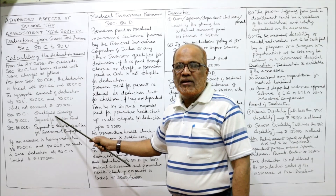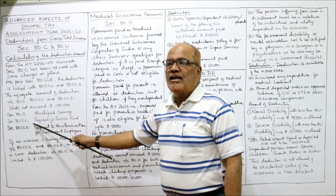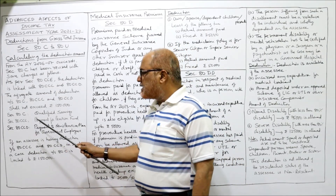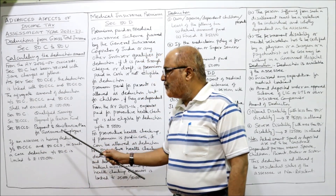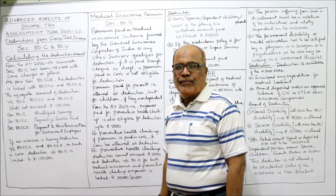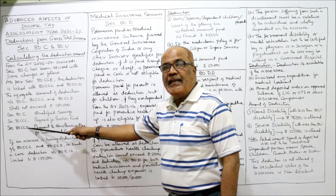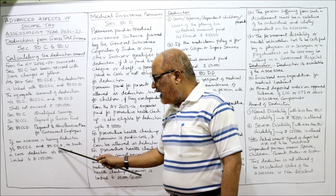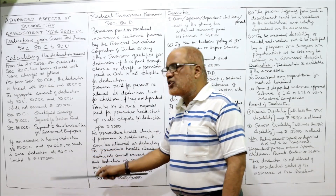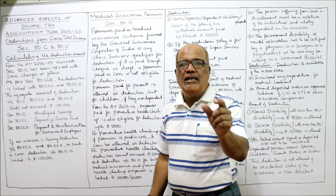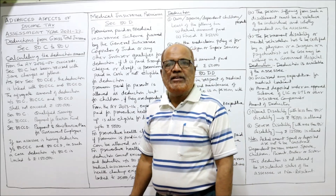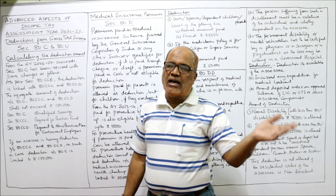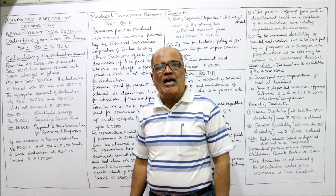ATC is regarding qualified savings. ATCCC is regarding payment for pension fund, and ATCCD is regarding payment to the new pension fund for government employees. These three are linked. If an SSC is having deduction under ATCCC and ATCCD, then the deduction under ATC is limited up to rupees one lakh fifty thousand. These are the provisions regarding qualified savings, which I explained in detail in the last video.